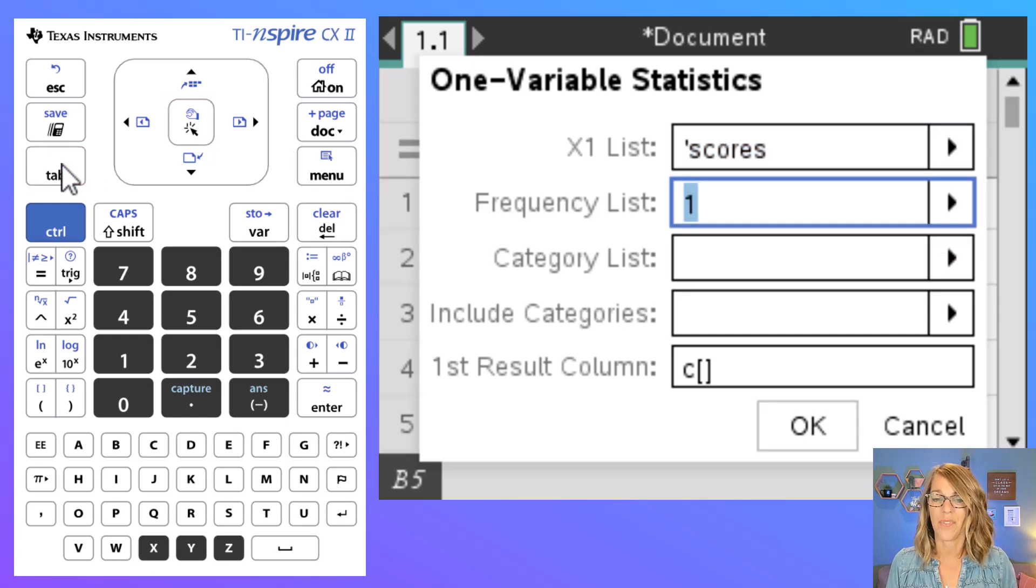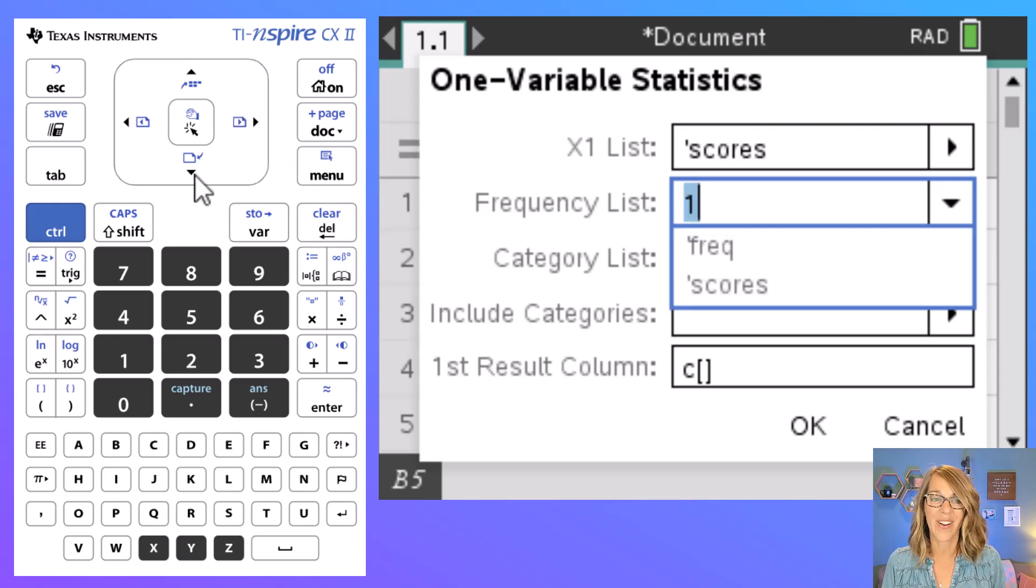I'm going to tab down to the frequency list. The default is to count each of those scores a single time. I'm actually using my frequency list because I've got multiple students in each group so I want to do the same thing. I'm going to click the right arrow twice and then I'm going to arrow down until I get to frequency and then I'm going to click that center button of my touchpad or you can hit enter.